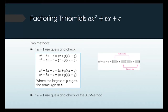Basically we're reversing FOIL. Factors of a is the first part, and factors of c is the last part. If a is one, you already know the first part has to be x times x to get x squared. Then there are lots of choices to get to c, the last number. You need to find the right combination that multiplies to c and also adds up to b from the outside and inside terms.